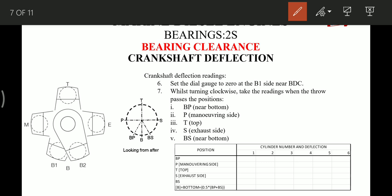Now let's see how we carry out crankshaft deflection. We set this dial gauge or this crankshaft deflection gauge at BP to zero. That is this BP, P, T, S, BS and P.